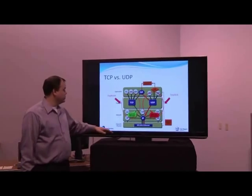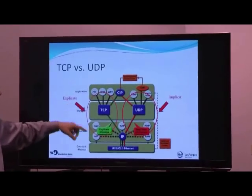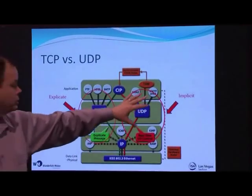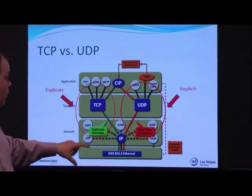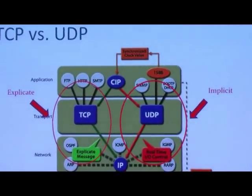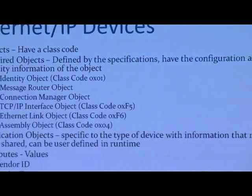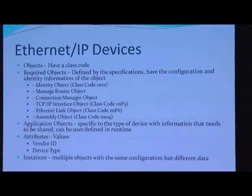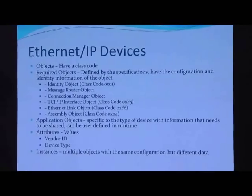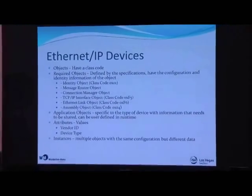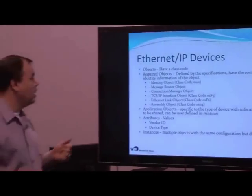Looking at the different layers of the Ethernet, we can see that explicit messaging resides in one area of the OSI stack and implicit in another, and how the CIP and the Ethernet work together to move these two pieces of data across the network. The next important concept is how devices encapsulate their data in objects.